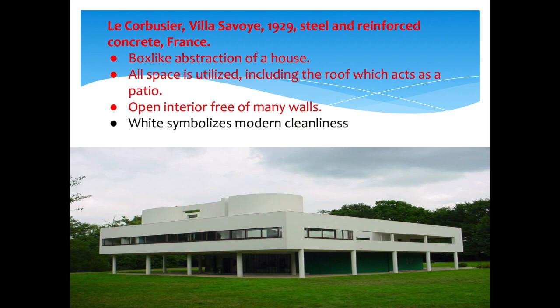The white of Villa Savoye symbolizes the modern cleanliness of the building. For Le Corbusier, all space is utilized — including the roof, which acts as a patio. It is truly a 'machine for living.' The white also symbolizes simplicity and healthful living. Furniture is built into the walls, ribbon-like windows wrap around the second floor, and the living spaces open up into an almost courtyard-like setting on the inside.